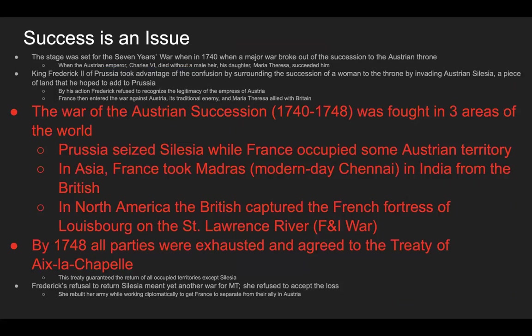In 1740, a major war broke out over the succession of the Austrian throne. When Emperor Charles VI died without a male heir, his daughter Maria Theresa succeeded him, but Frederick the Great of Prussia took advantage of the confusion surrounding a woman's succession to the throne and invaded Austrian Silesia — a piece of land he hoped to add to Prussia. By doing so, Frederick refused to recognize the legitimacy of the Empress of Austria. France then entered the war against Austria — its traditional enemy — and Maria Theresa allied with Britain.